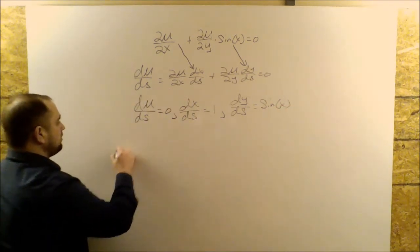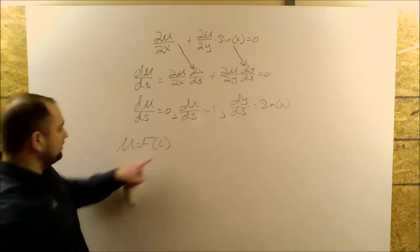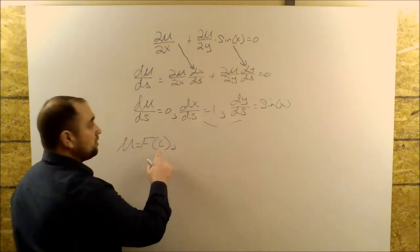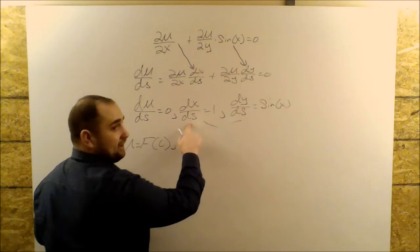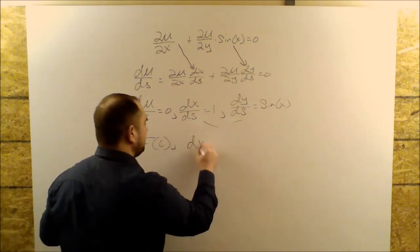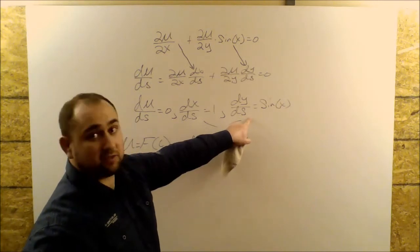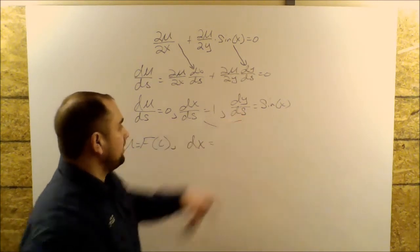Okay, here we have U is a function that is constant with respect to S. Then we use these two equations to find what this constant is. Solving this guy for dS, we get dX, so that's going to be equal to dS over here. So dS from here is equal to dY over sine of X.